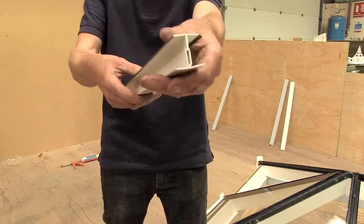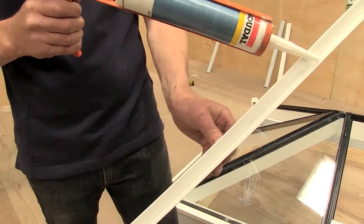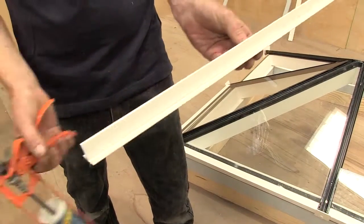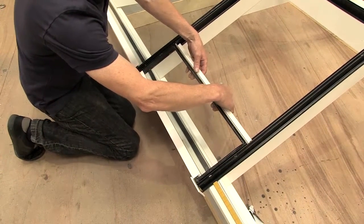Mounting bars have female and male connectors. Seal both sides of the internal female mounting bar close to the internal edge. Place the female mounting bar under the glass unit and press down.